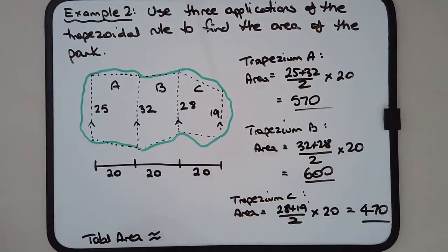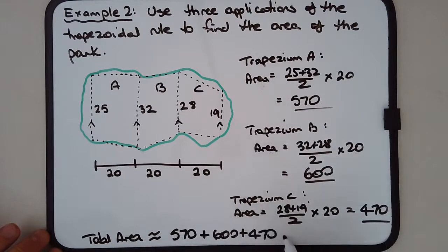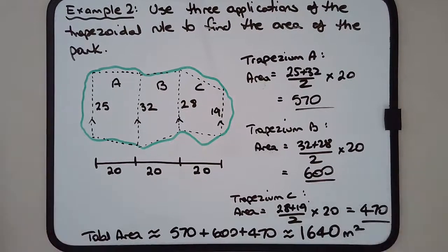Total area is equal to 570 plus 600 plus 470. So 570 plus 600 plus 470, and we get 1640 square meters for this park. And that's how we apply the trapezoidal rule.